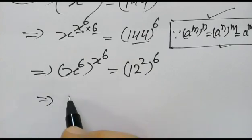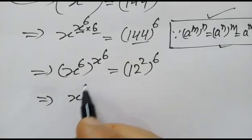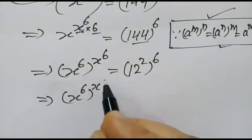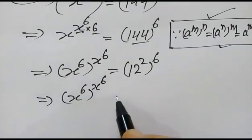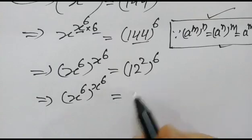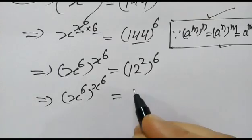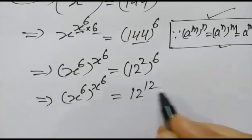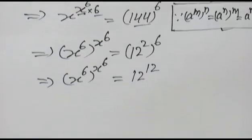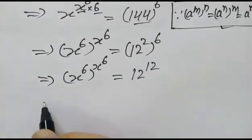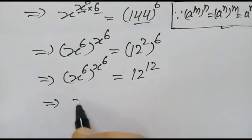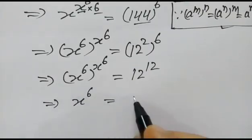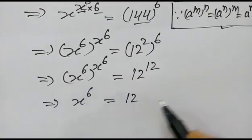So x to the power 6, to the power x to the power 6, is equal to 12 to the power 12. Now x to the power 6 will be equal to 12.